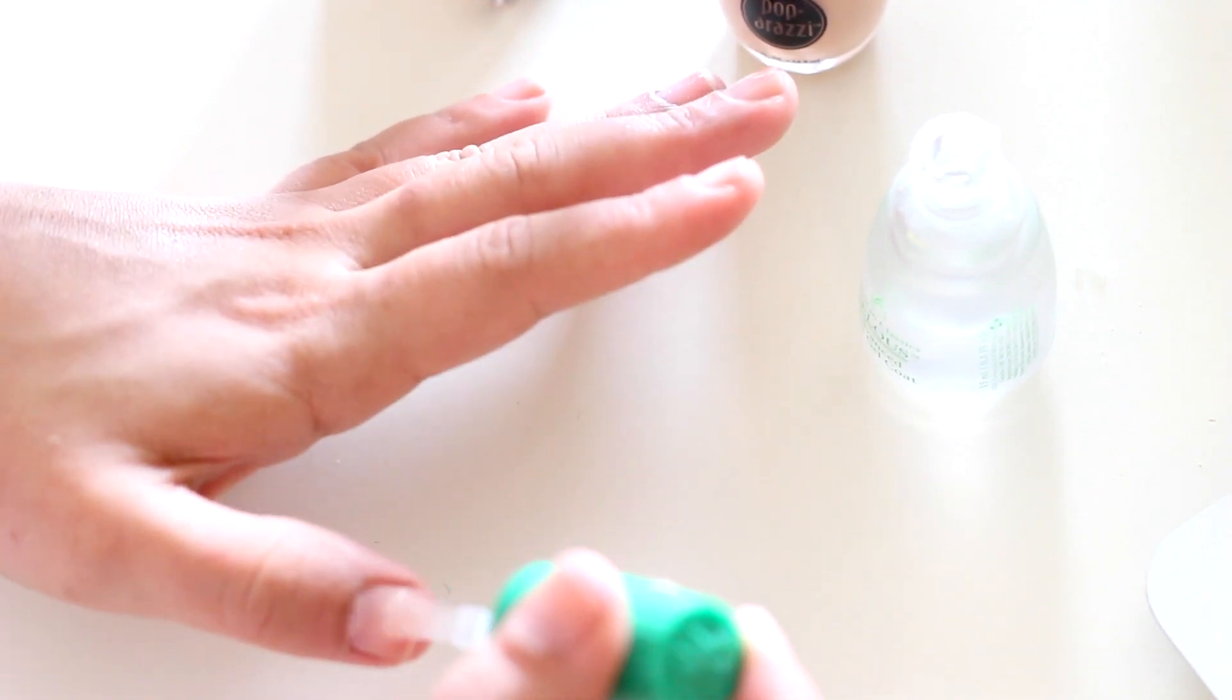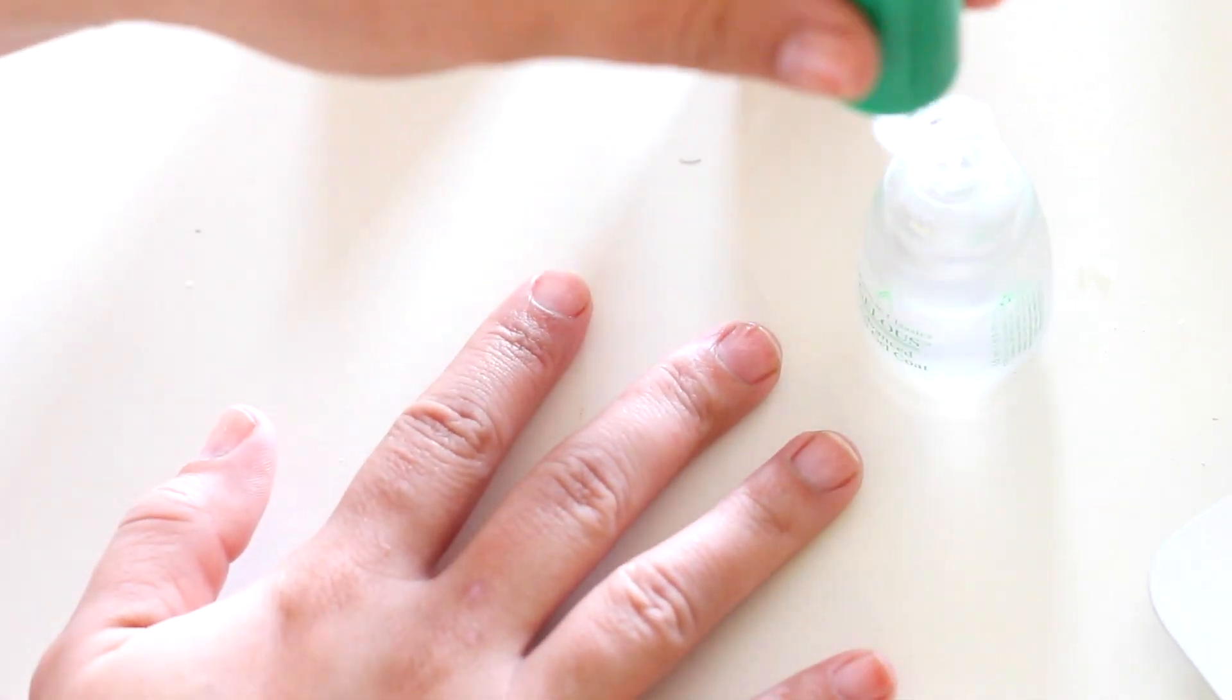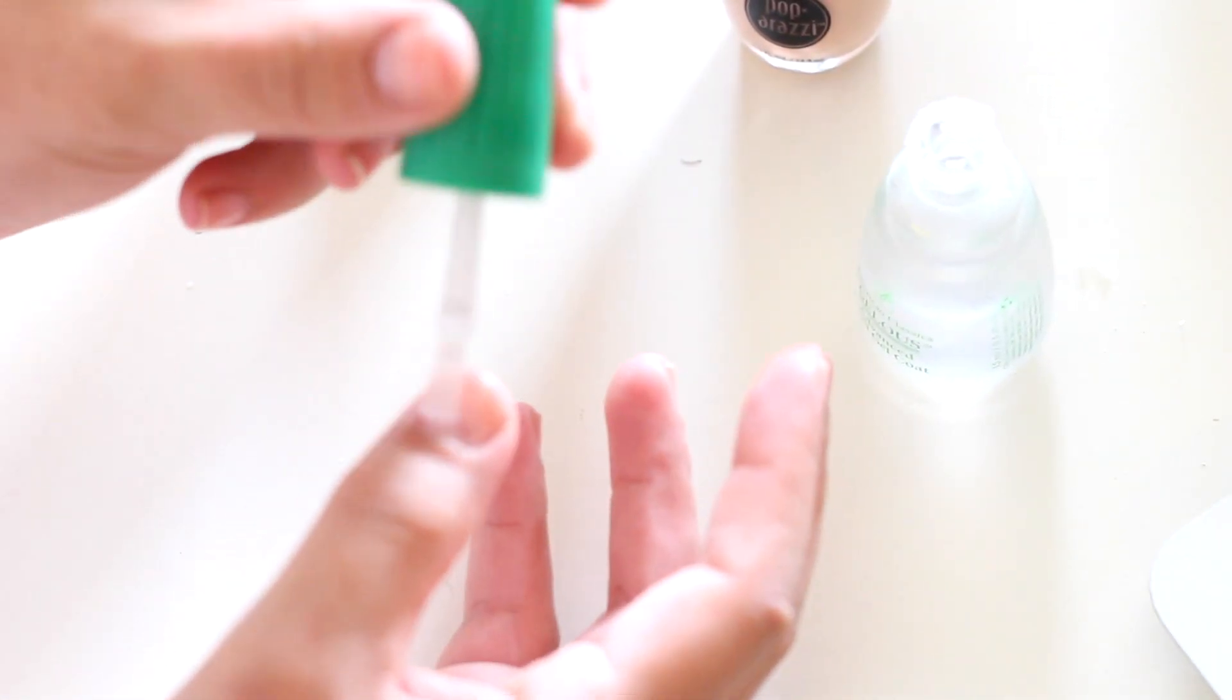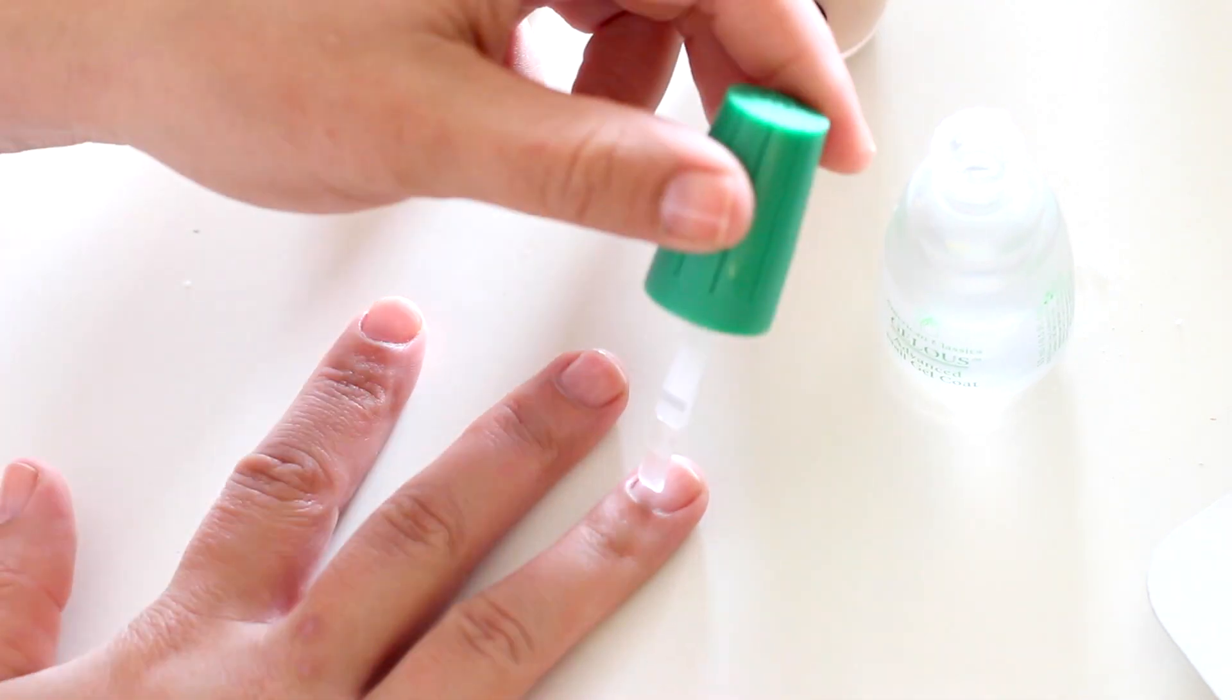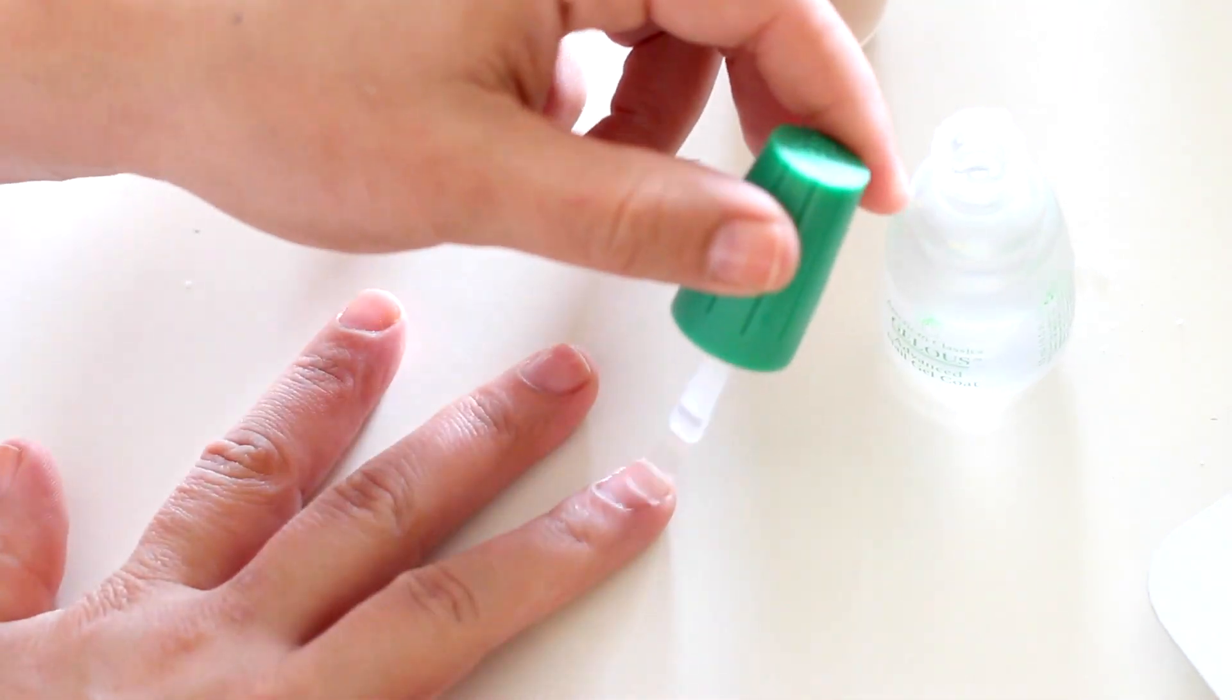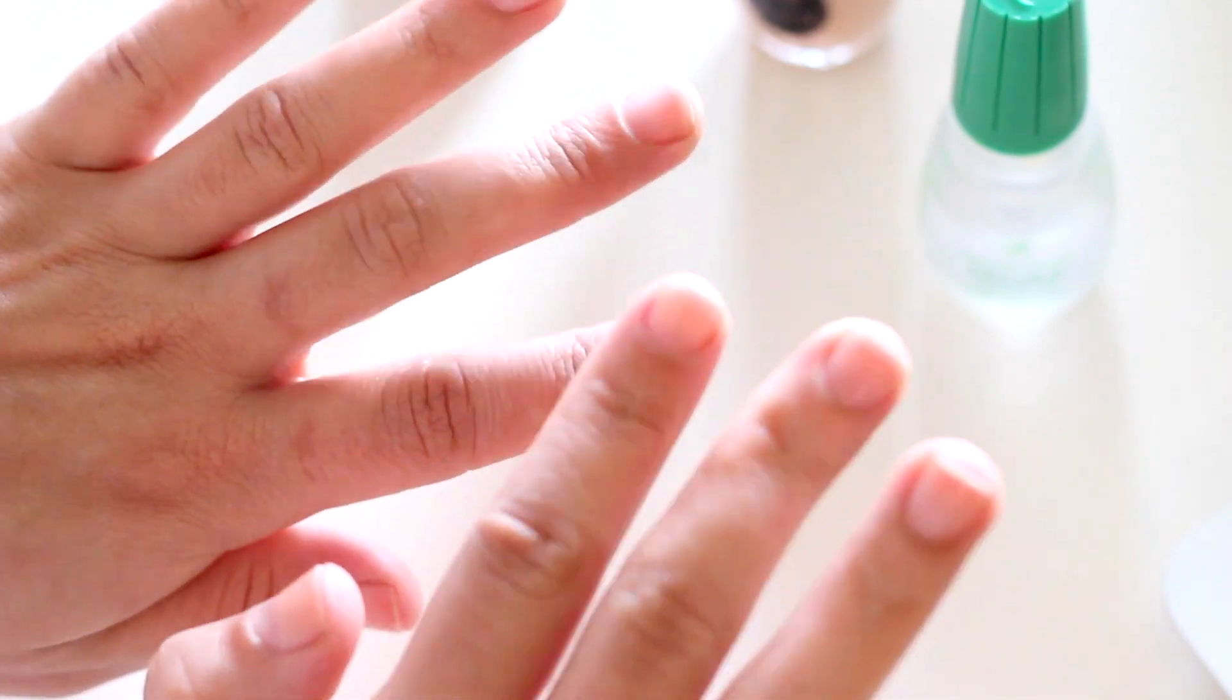Now we're moving on to the other hand. We're doing the same process of thin coats on that hand while the hand that we just did is drying. The drying process for this is pretty quick because the layers are so thin. You want to wait maybe three to five minutes so that it's somewhat tacky, not completely dry but almost dry, and then we're going to apply our nail polish.